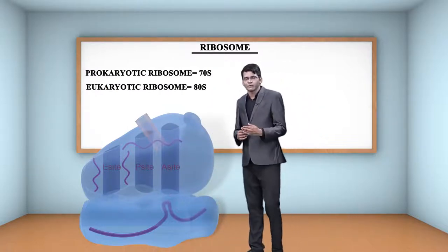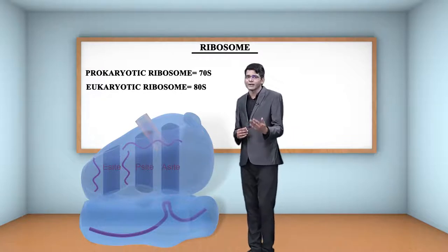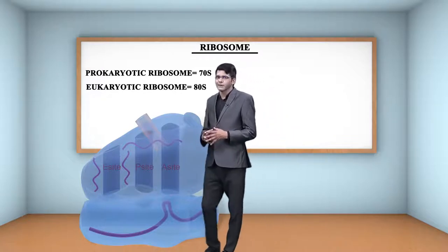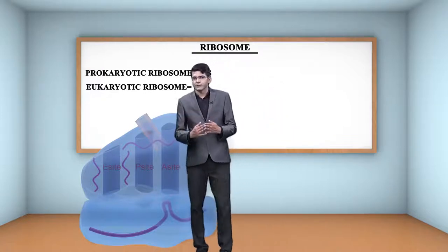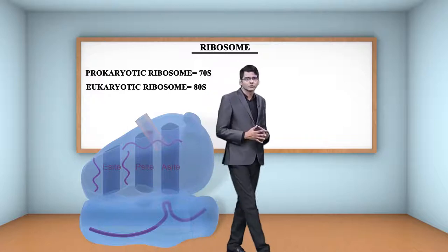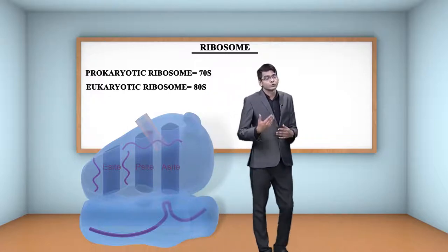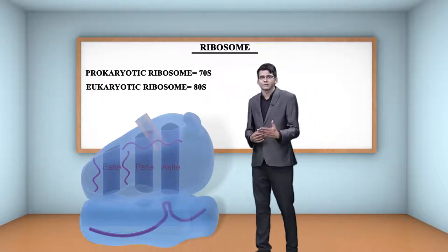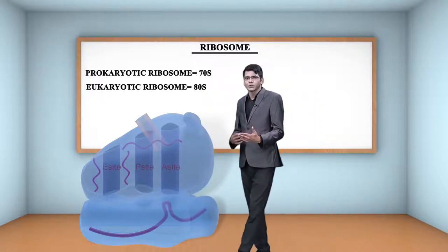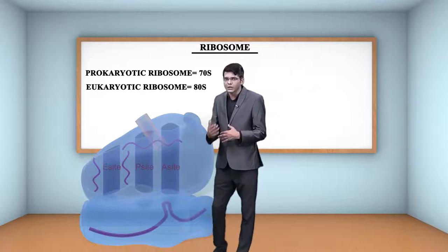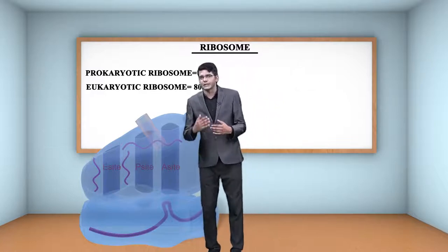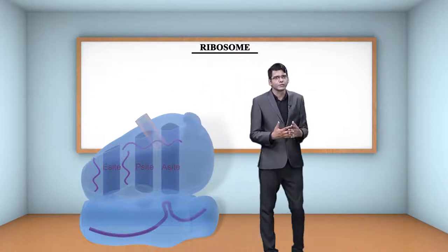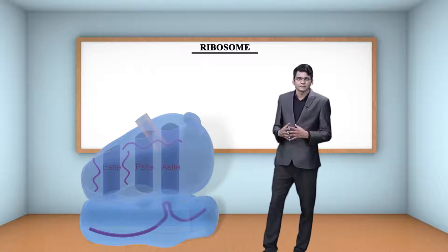What do we mean by the 80S type of ribosomes? It means when eukaryotic ribosomes are centrifuged inside a sucrose density gradient, the scale we observe is at 80. Hence, they are known as 80S.